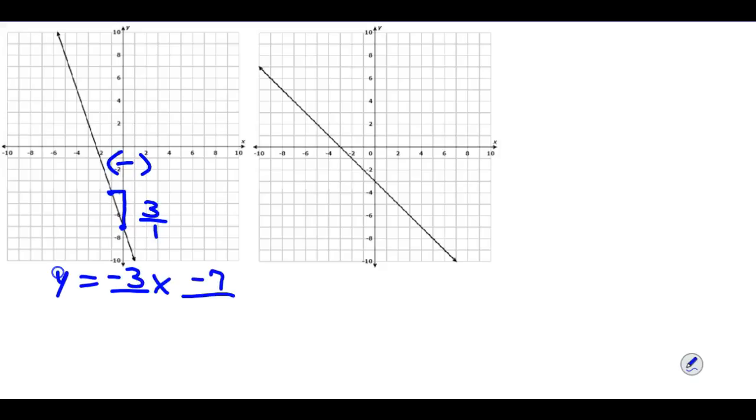You might have started out with 6 over 2 or 3 over 1 knowing that they're negative because this is a negative slope. And then you have to reduce, always reduce.